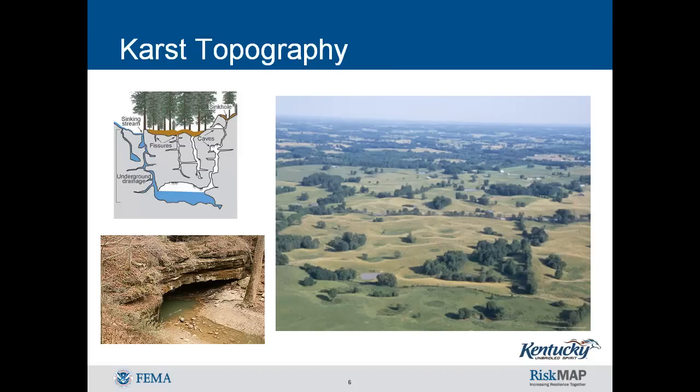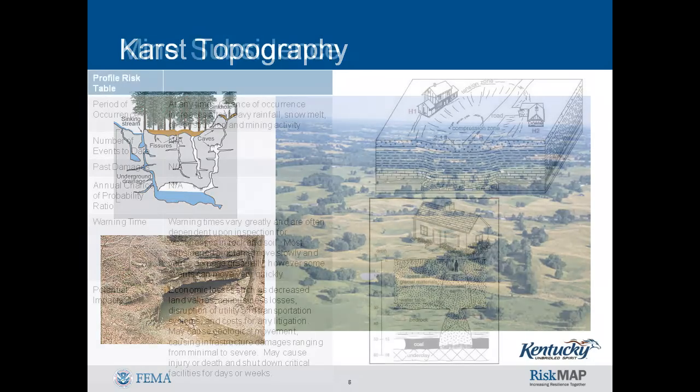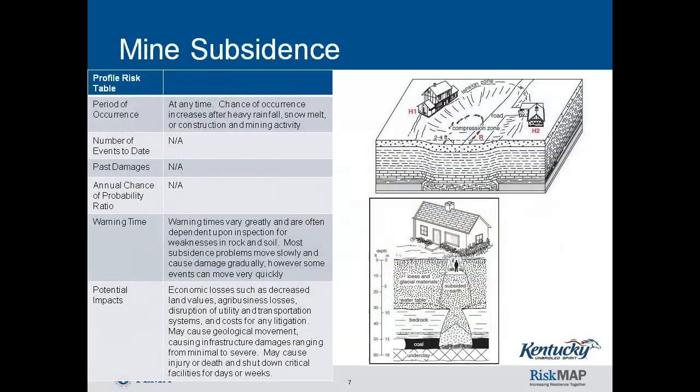Karst topography results in channels and caves that are a danger due to susceptibility to collapse from the surface, forming sinkholes. Mine subsidence can be defined as movement of the ground surface as a result of readjustments of the overburden due to collapse or failure of underground mine workings. Surface subsidence features usually take the form of either sinkholes or troughs. Several types of subsurface mining, and specifically methods which intentionally cause the extracted void to collapse, will result in surface subsidence.